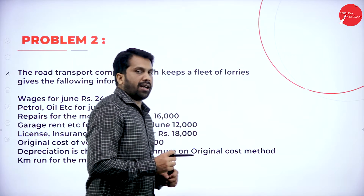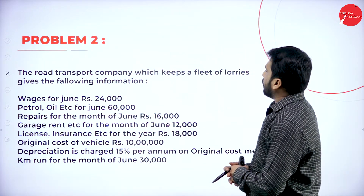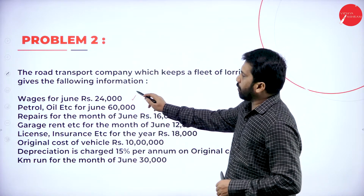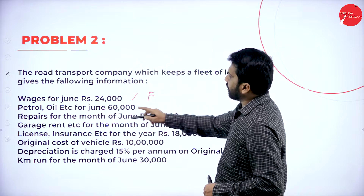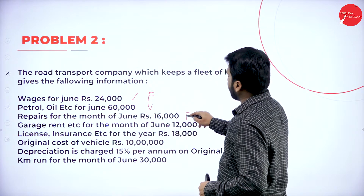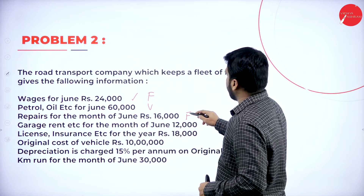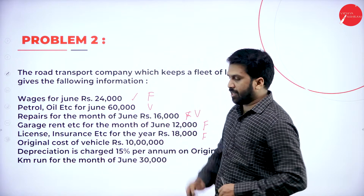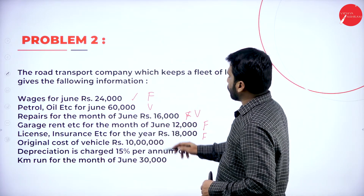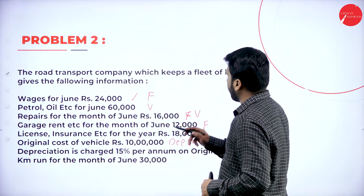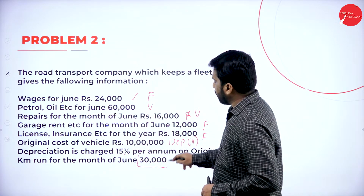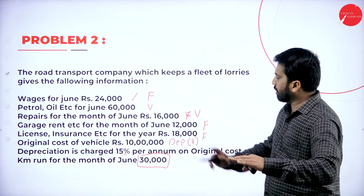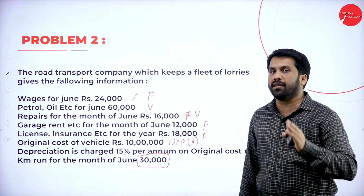This is all about Problem 1. Now I'll go to Problem 2. A road transport company which keeps a fleet of lorries gives the following information for the month of June. Wages: fixed. Petrol and oil: variable. Repair: variable. Garage rent: fixed. License and insurance: fixed. Original cost of vehicle — we have to calculate depreciation and it is variable, at 15% depreciation charges. Total passenger-kilometers are directly given — no need to calculate 4 × 4 or any multiplication. What is the total kilometers run is directly given.